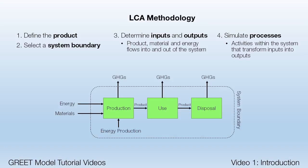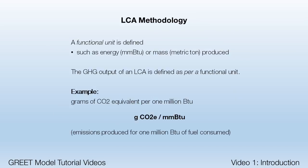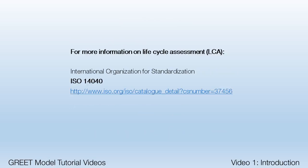To conduct an LCA, a product is selected and a system boundary is established to define what processes should be included in the product system. Inputs and outputs are product, material, or energy flows into and out of the system. Processes are activities within the system that transform inputs into outputs. To quantify the environmental impacts of a product, a functional unit is defined, such as 1,000,000 BTUs or 1 ton, so that an output such as CO2 can be quantified in terms of grams of CO2 per 1,000,000 BTUs or per 1 ton of the product. These are a few of the basic terms used in LCA. It might be helpful to review ISO 14040 for more principles of LCA.